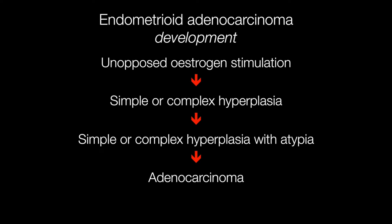Endometrioid adenocarcinoma results as a continuum of changes. Unopposed oestrogen stimulation will cause the previously normal endometrium to become hyperplastic. This may be simple or complex, and eventually this may become atypical, after which adenocarcinoma may develop. The challenge for the pathologist is firstly to determine when hyperplasia has become atypical, and then whether the atypia is simply atypia or adenocarcinoma.